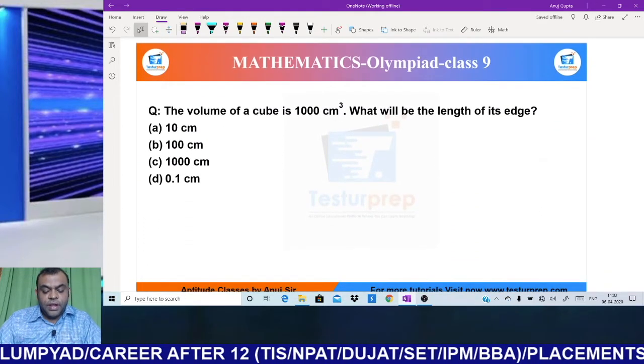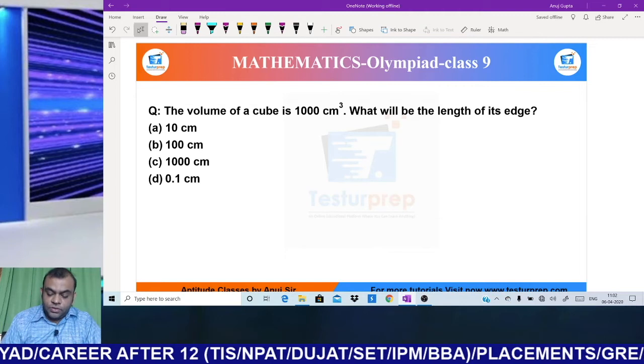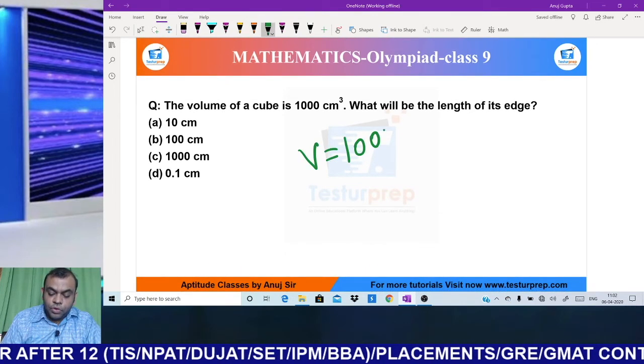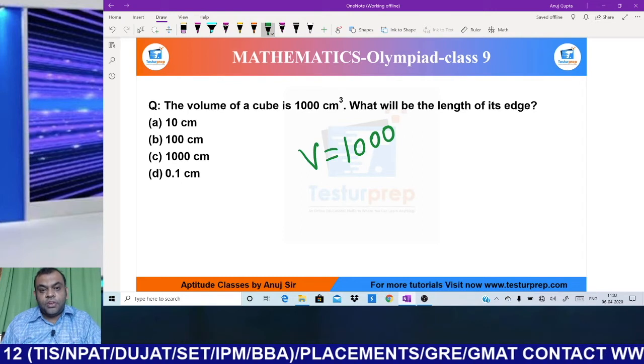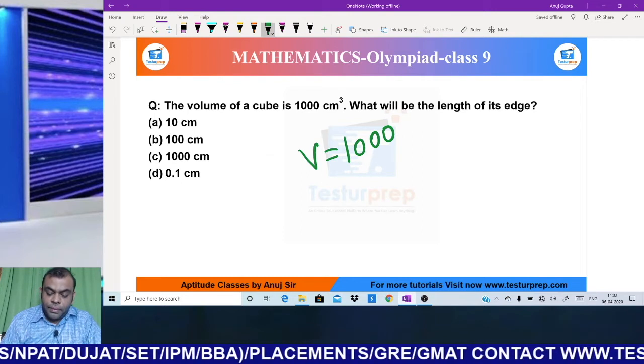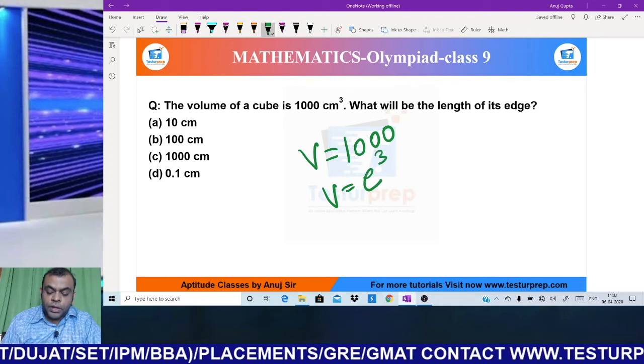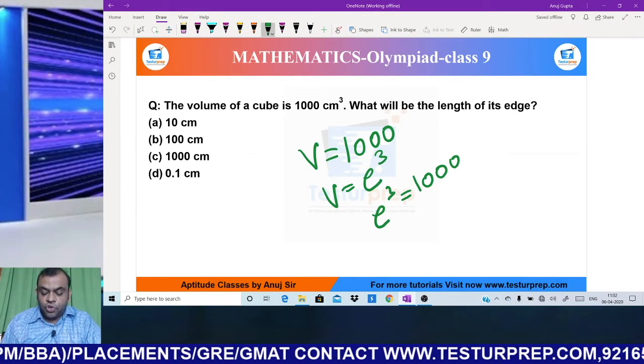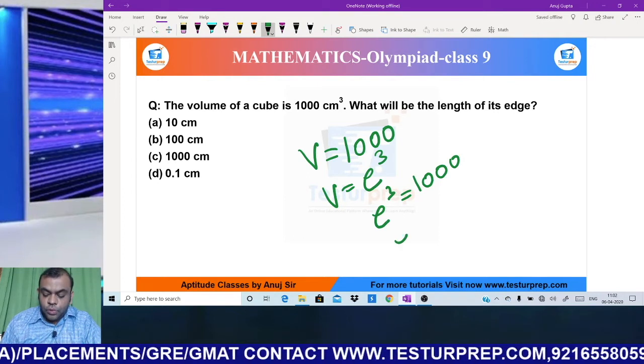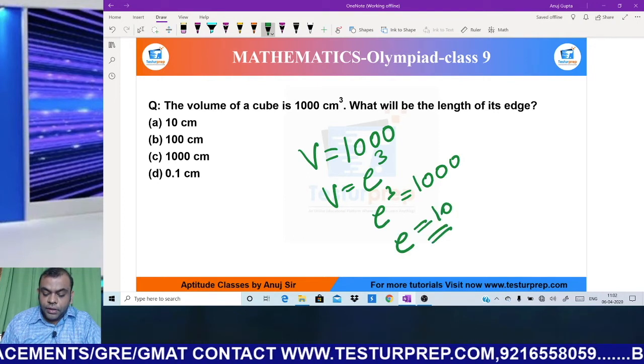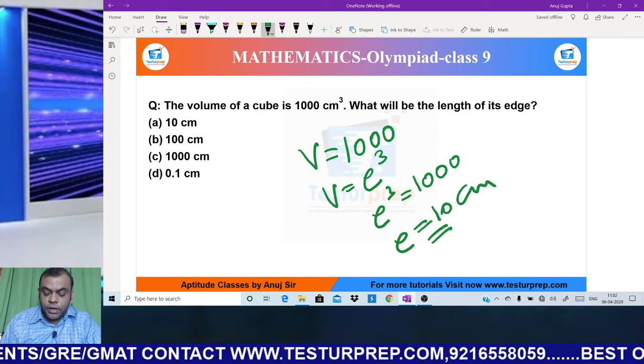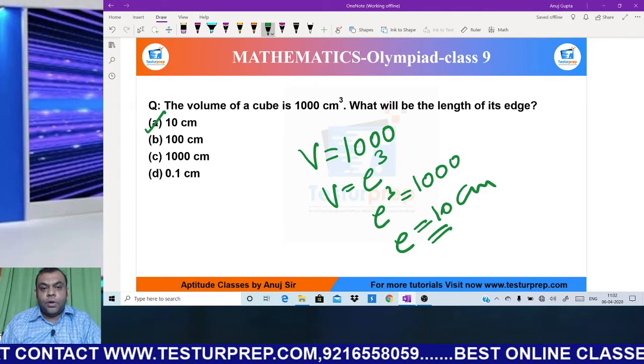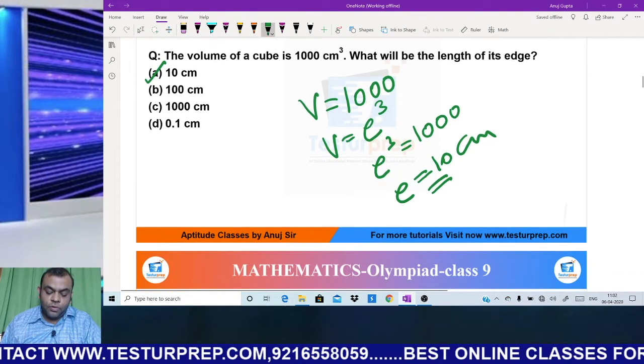My next question says: the volume of a cube is 1000 cm³. What will be the length of the edge? We know volume of cube = edge³. So edge³ = 1000. Taking cube root, edge = 10. So answer is 10 centimeters, present in option E. I hope this is clear. Once clear, move on to the next question.